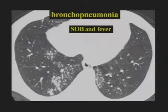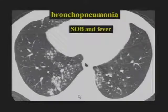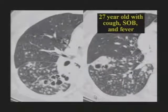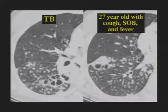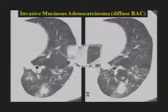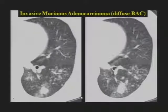A patient with bronchopneumonia, shortness of breath, and fever shows centrilobular nodules of soft tissue attenuation — infection is high on the differential when you see centrilobular nodules. A 27-year-old with cough, shortness of breath, fever, a few lower lobe cavities, and centrilobular nodules — this is endobronchial spread of TB. Another patient shows invasive mucinous adenocarcinoma with centrilobular nodules due to endobronchial spread.